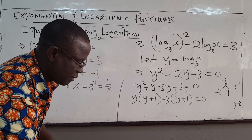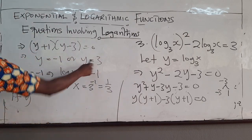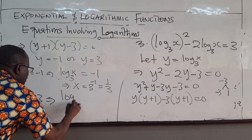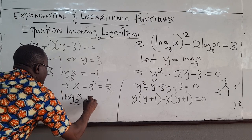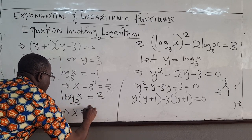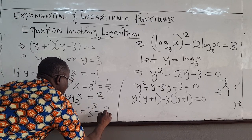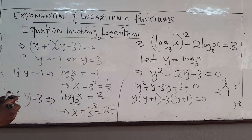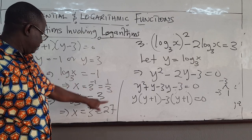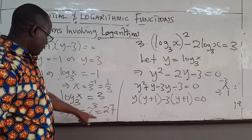And if y is equal to 3, this implies log base 3 of x equals 3, which means that x equals 3 raised to the power 3, which is 27. So the values of x are 1 over 3 or 27.